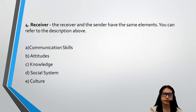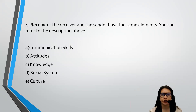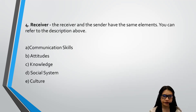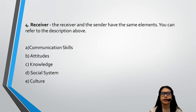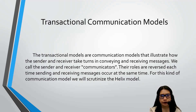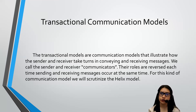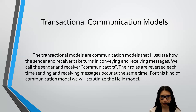The fourth factor is the receiver. The receiver and the sender have the same elements because they are both people — it's just that they have different functions during communication, and they can interchange their roles. So the receiver should also have communication skills, attitude, knowledge, social system, and culture, similar to the sender. That concludes the linear communication models and their examples: the Shannon-Weaver and Berlo's SMCR model.